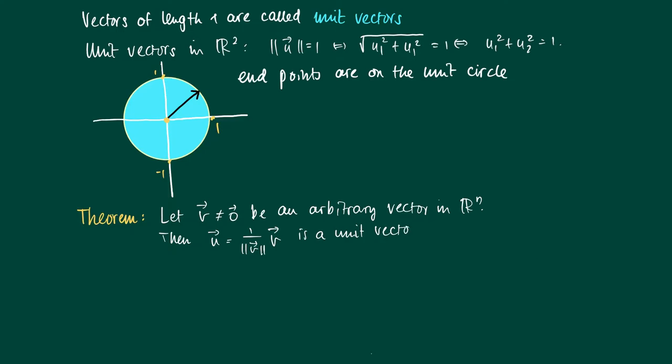We can easily show it as follows. The length of u is the length of (1 over the length of v) times vector v. The term 1 over ||v|| we can get it out because it's a constant with an absolute value—it's a property that we've shown before.